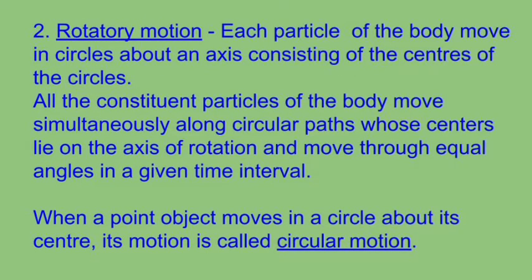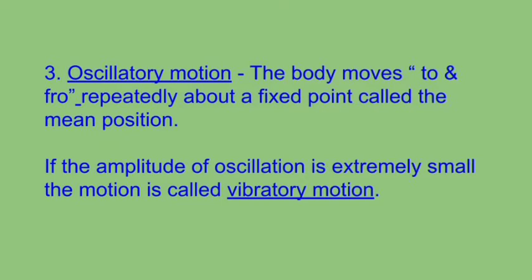The second type is rotatory motion. A body is said to have rotational motion if each particle of the body moves in circles about an axis consisting of the centers of the circles. That is, all the constituent particles of the body move simultaneously along circular paths whose centers lie on the axis of rotation and move through equal angles in a given time interval. When a point object moves in a circle about its center, its motion is called circular motion. The third type of motion is oscillatory motion. A body is said to have oscillatory motion if it moves to and fro repeatedly about a fixed point called the mean position. If the amplitude of oscillation is extremely small, the motion is called vibratory motion.